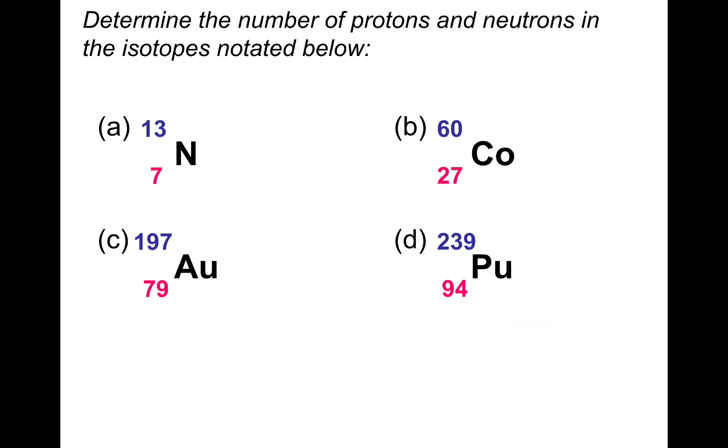If you want to have a go at this one then, you can pause and have a go at these four questions, and I'll take you through the answers. So determine the number of protons and neutrons in the isotopes notated below. First one, nitrogen. So we've got seven protons. That's the atomic number at the bottom. Then the number of neutrons will be the difference between the total mass and the atomic number.